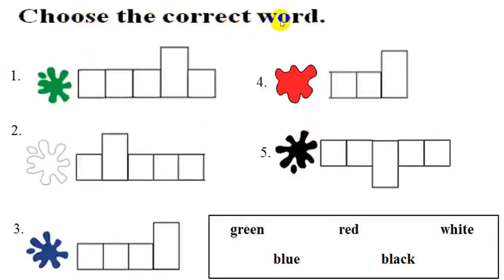Choose the correct word. Number one. What color is it? It's green. Good job. So we write G, R, E, E, N. The others, you do it the same. Ok.